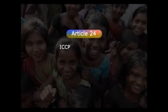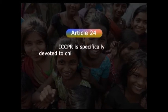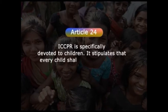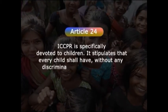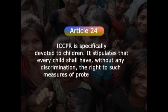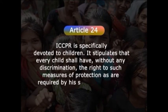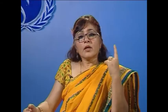If a marriage is dissolved, provision must be made for the protection of any children, Article 23 clause 4. Article 24 of the ICCPR is specifically devoted to children. It stipulates that every child shall have without any discrimination the right to such measures of protection as required by his status as a minor on the part of his family, society and the state. It further prescribes that every child must be registered immediately after birth and have a name, and that every child has the right to acquire a nationality.